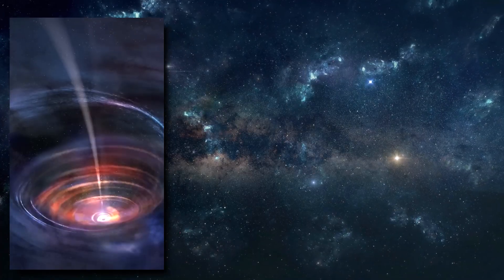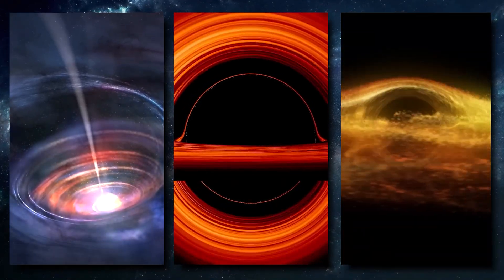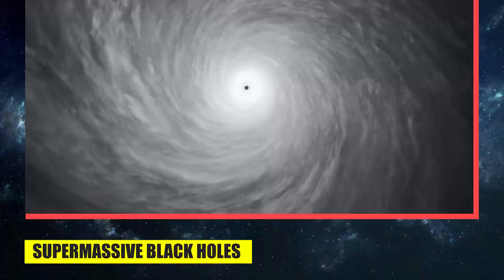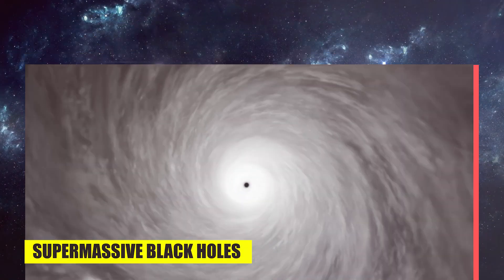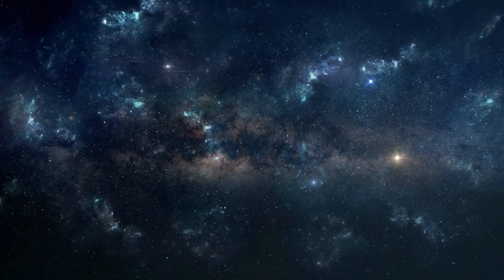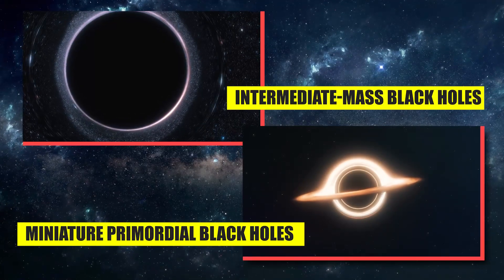There exist various types of black holes, categorized by their mass and origin. Stellar black holes are remnants of gargantuan stars, while supermassive black holes sit at the heart of most galaxies, including our own Milky Way. Then there are theoretical categories like intermediate-mass black holes and miniature primordial black holes.